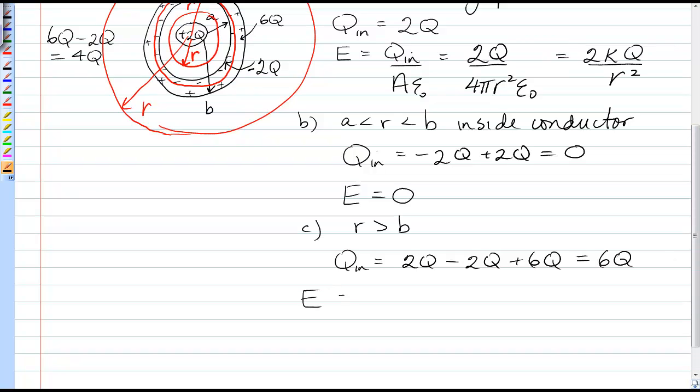So the electric field outside the entire distribution would be 6Q over 4πr² epsilon naught. And once again, the entire distribution does act like a point charge with total charge 6Q.